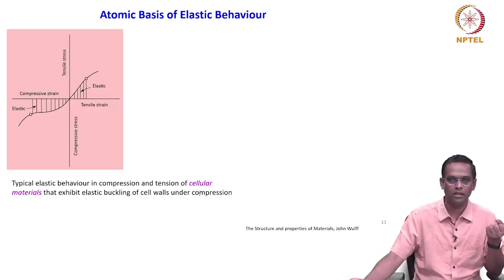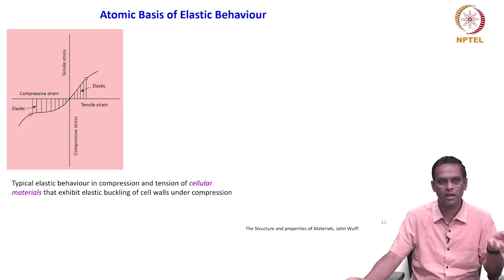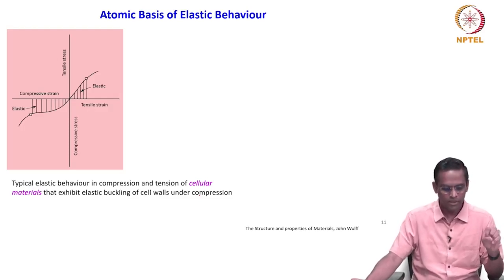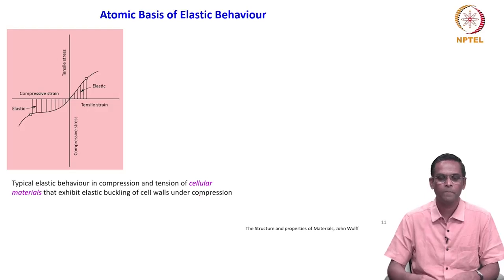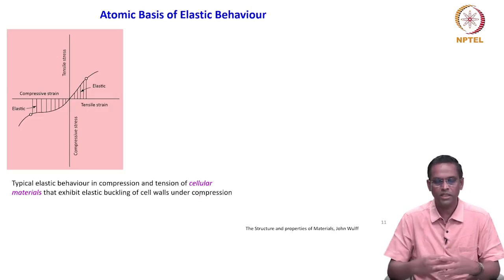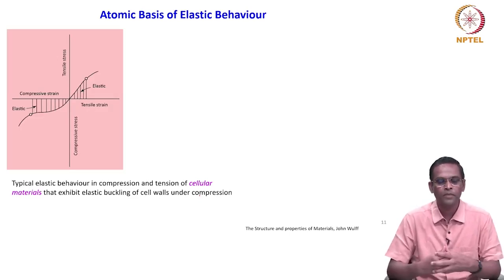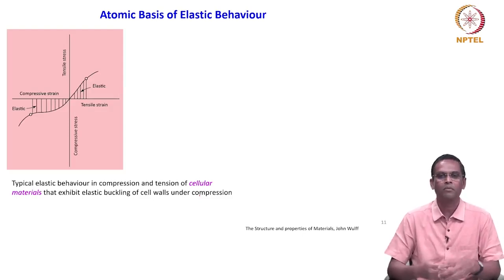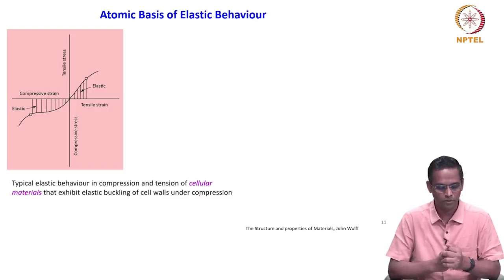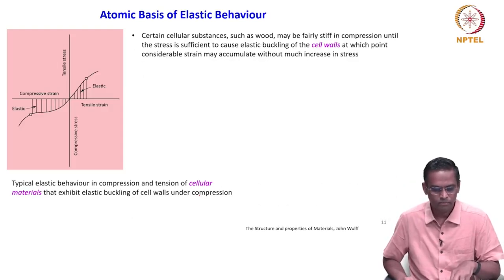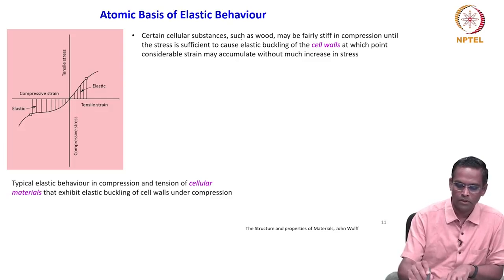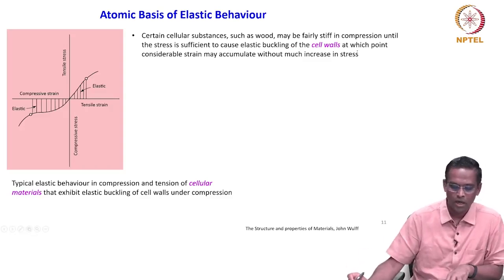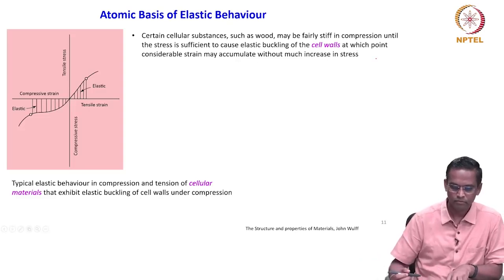The other class of material is cellular materials. The name itself gives some answer - the structure is made up of cells. There are many examples even in natural materials; wood is also considered a cellular material. The cells could be open cells or closed cells, could be vacuum inside or gas-filled depending upon the processing procedure. A classical example is natural wood, which may be fairly stiff in compression until the stress is sufficient to cause elastic buckling of cell walls, at which point considerable strain may accumulate without much increase in stress.